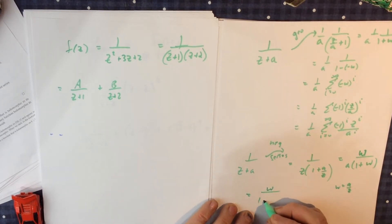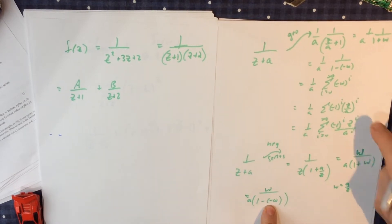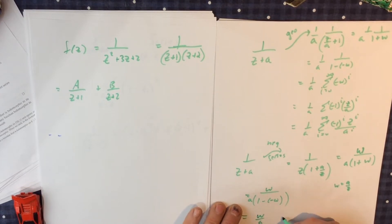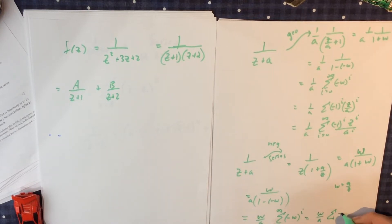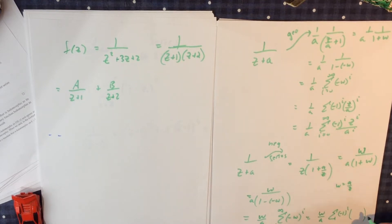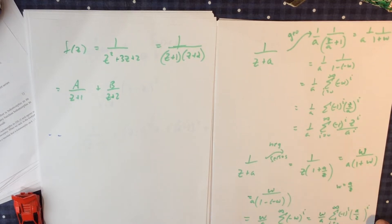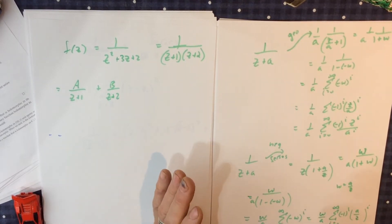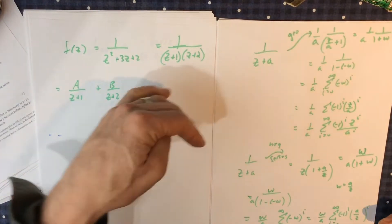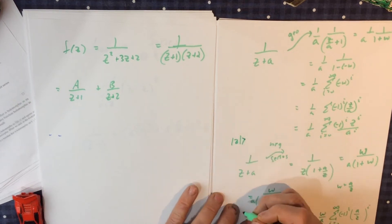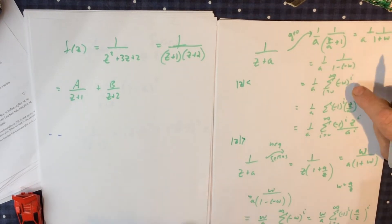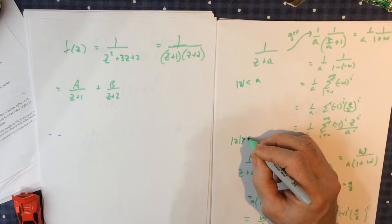With w equal to a over z substituted back, we have a negative power series. We have a choice whenever we see something like this: create a geometric series or a negative series. The negative series is good when |z| is bigger than a specific value, and the geometric series in z is good when |z| is less than a specific value. So we have a series that works inside of a value and outside of a value.